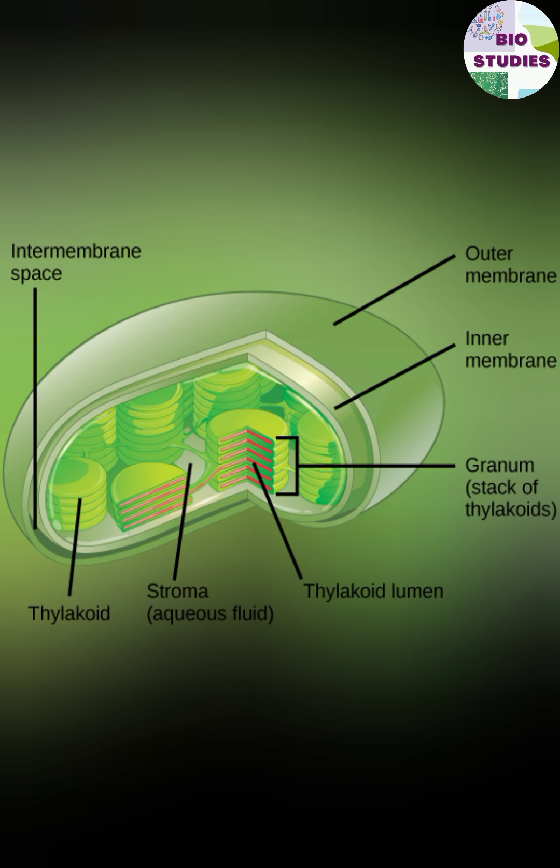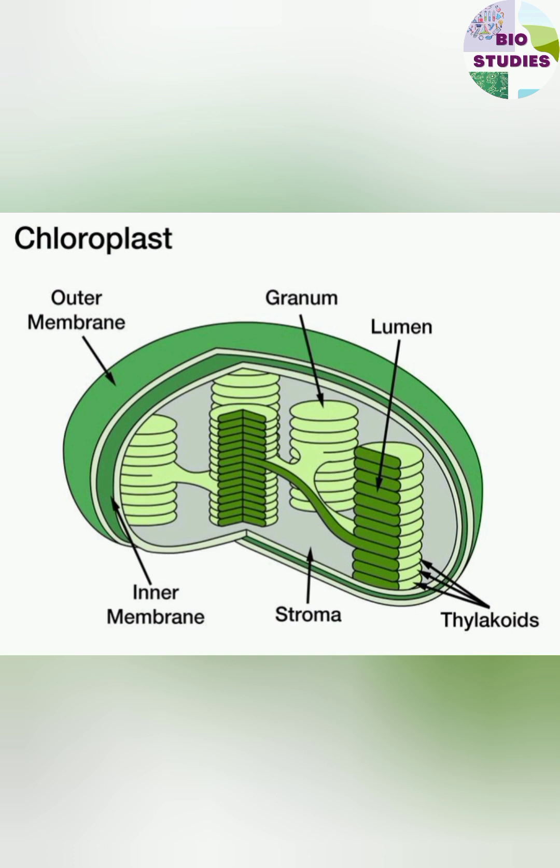The outer membrane has less proteins and it is permeable. The inner membrane has more proteins and it is selectively permeable.